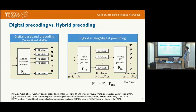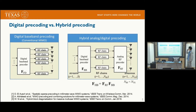The power consumption is very high because these RF chains are very power-consuming elements. So to reduce the power consumption, the hybrid architecture has been used. In this hybrid architecture, the pre-coding process is divided into two parts.